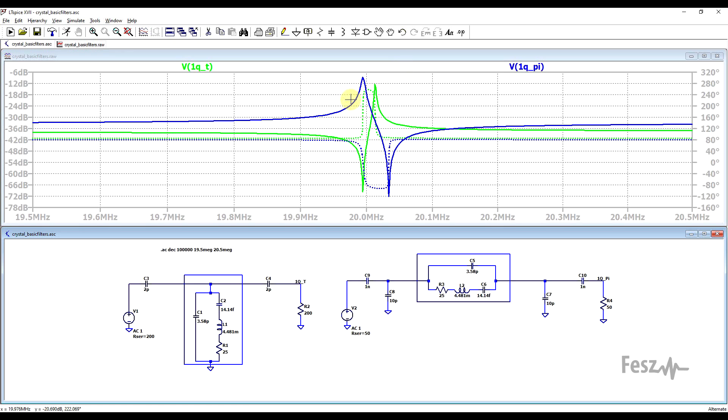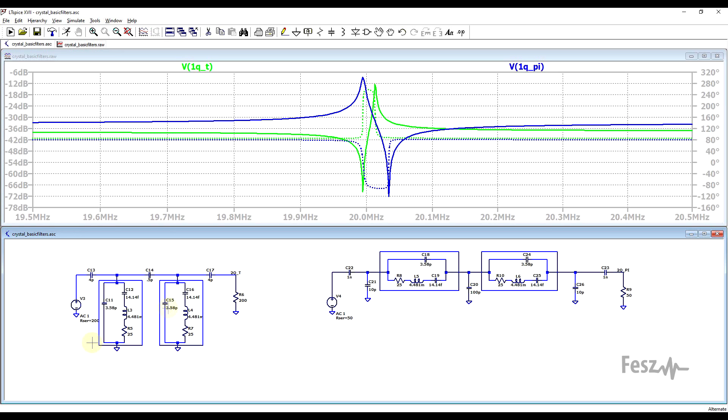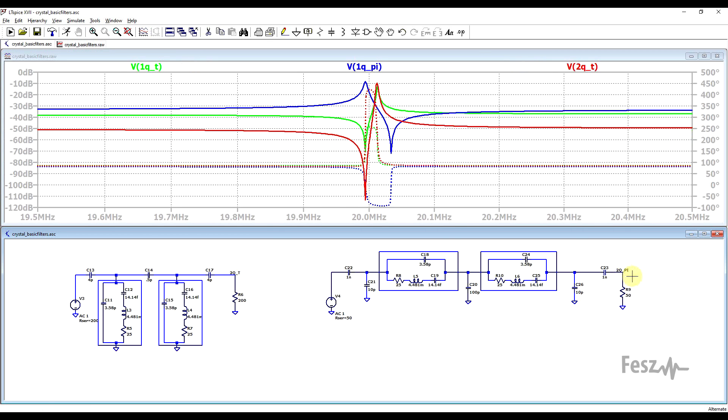Now, if this amount of attenuation is not enough, and you want higher amounts, you can build higher order filters, with multiple of the fundamental blocks. So just as an example, I prepared two crystal t-circuits and two crystal pi-circuits. If we look at the responses and plot them on the same graph, first of all, we can see that the passband frequencies are more or less in the same place, and the attenuation is much higher than with the single crystal circuits. So multiple crystals can be put into the circuit to obtain higher and higher amounts of attenuation.